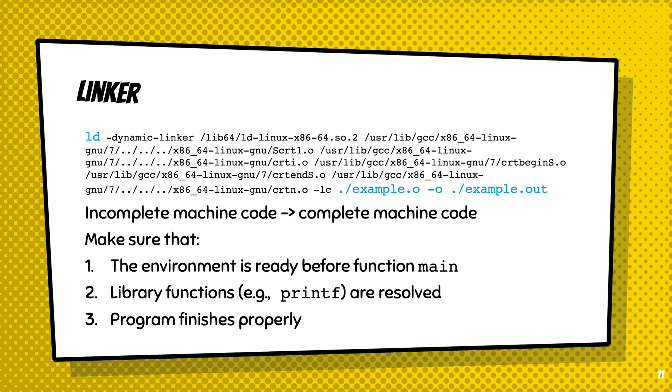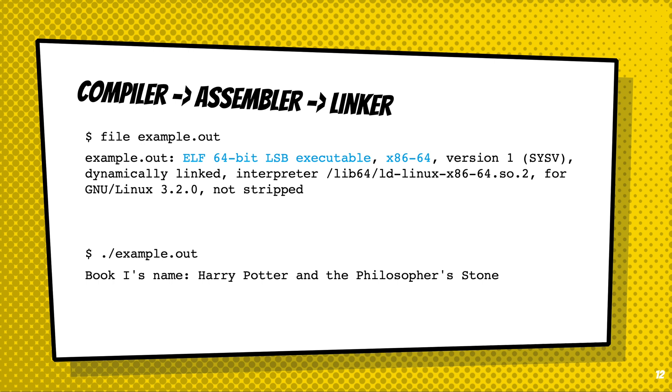And of course, the linker will make sure that the program, once generated, will be able to execute and finish properly. After the source program goes over the entire process from compiler to assembler to linker, it will generate example.out. And if you check the type of example.out, you'll see that it is type ELF 64-bit LSB executable.